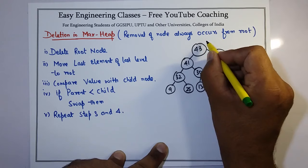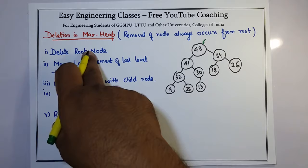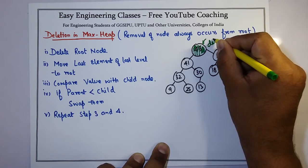That means I have to delete 43, the root node. The first step is to move the last element of last level to root.